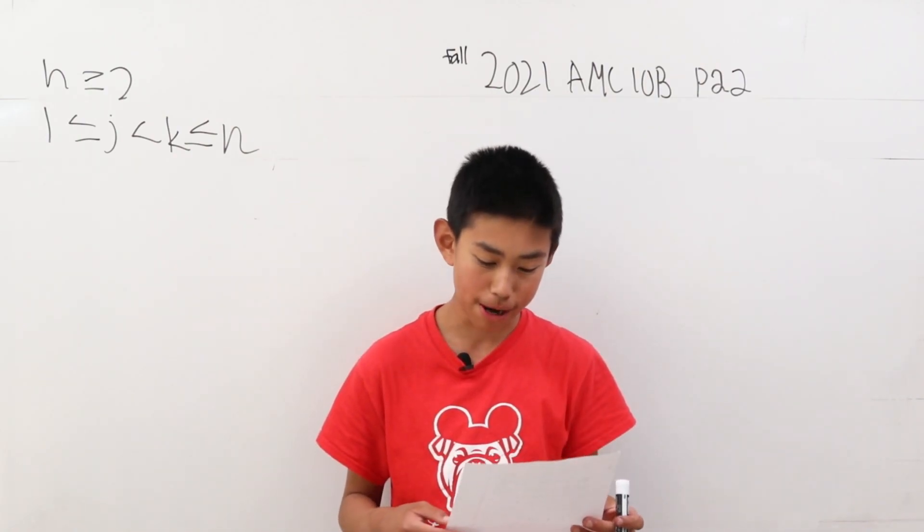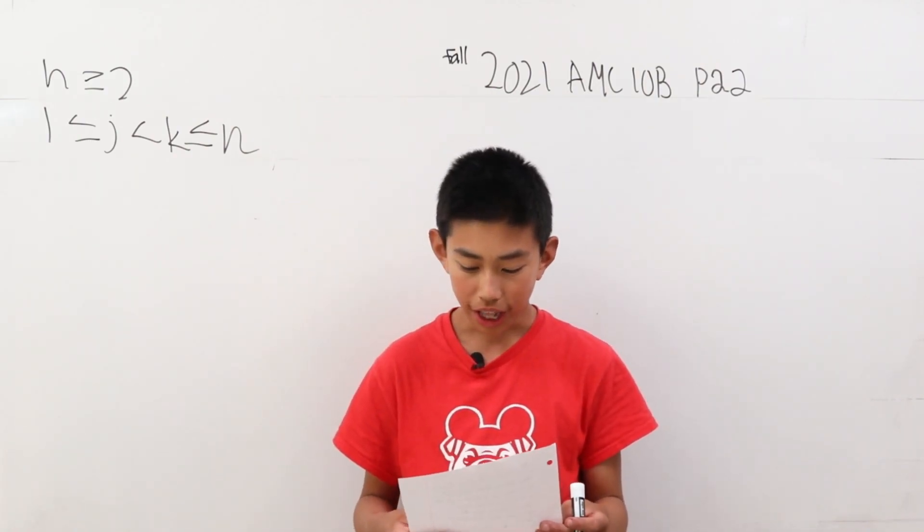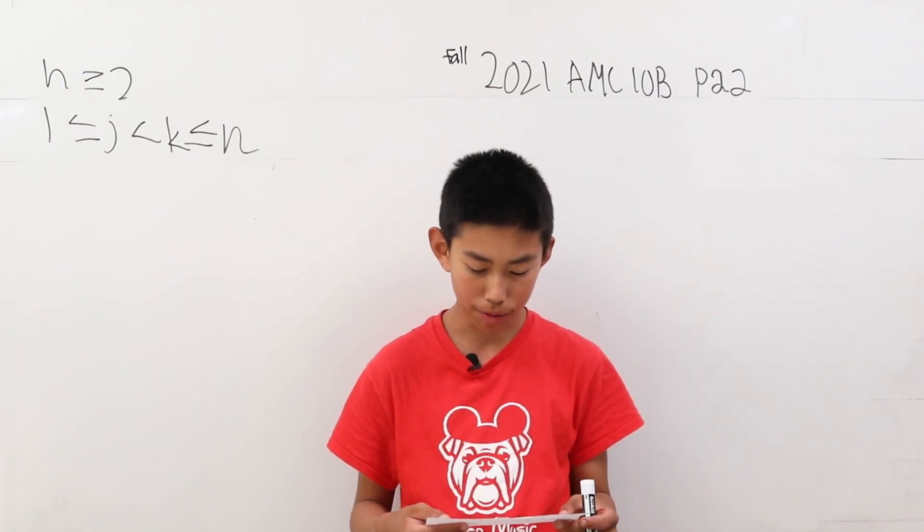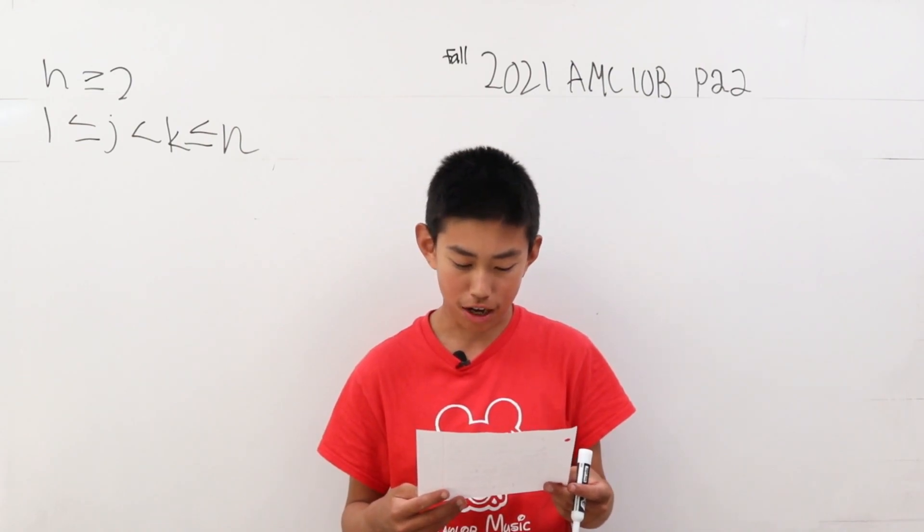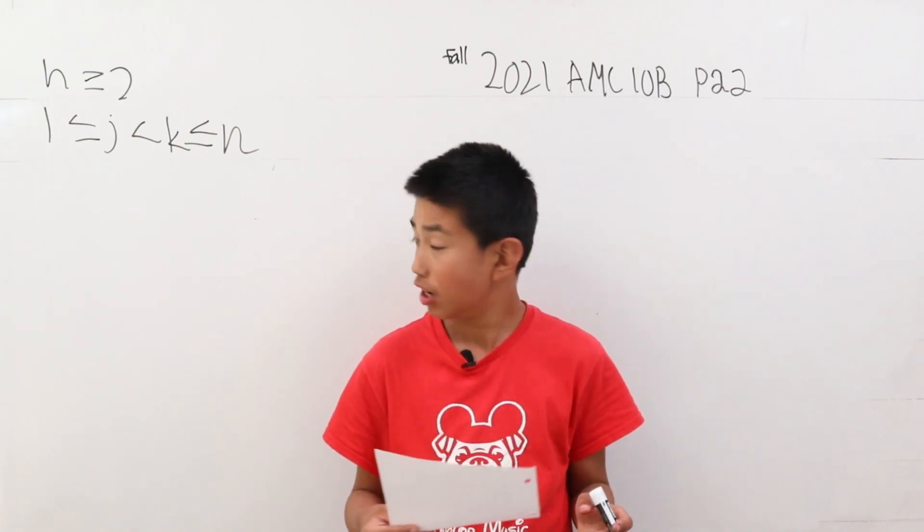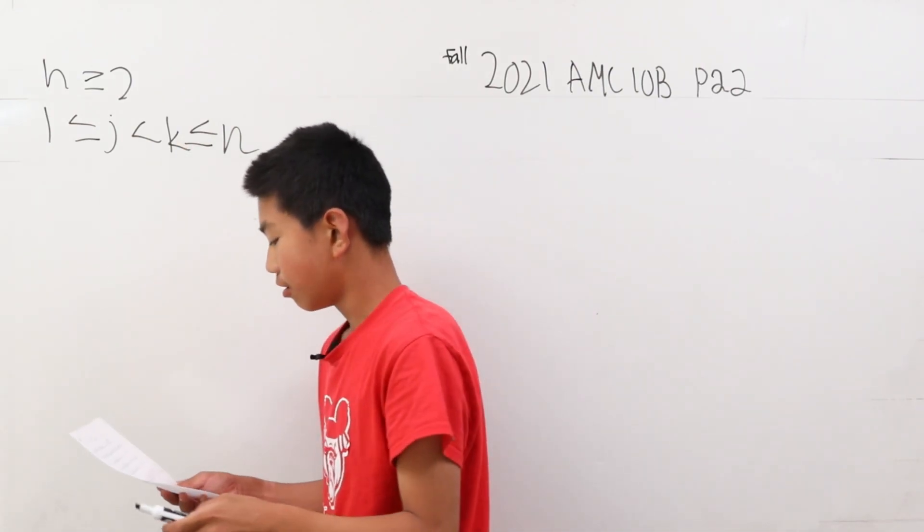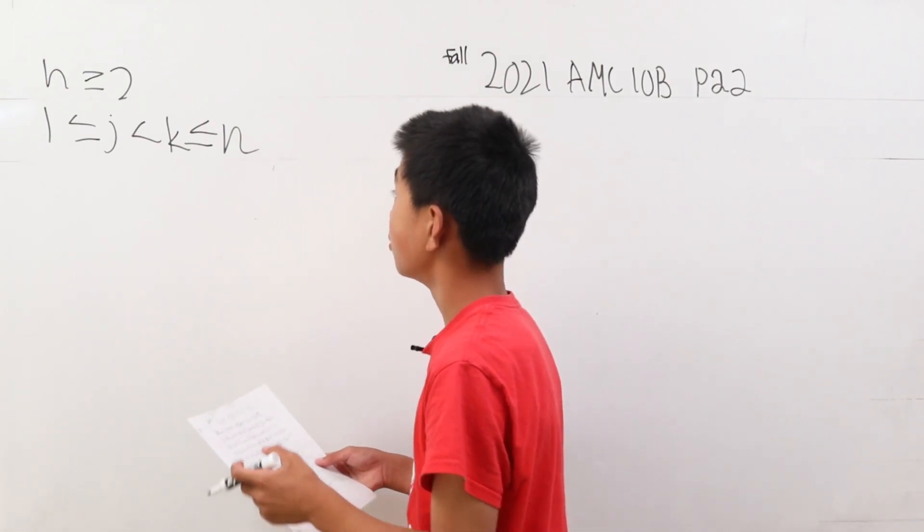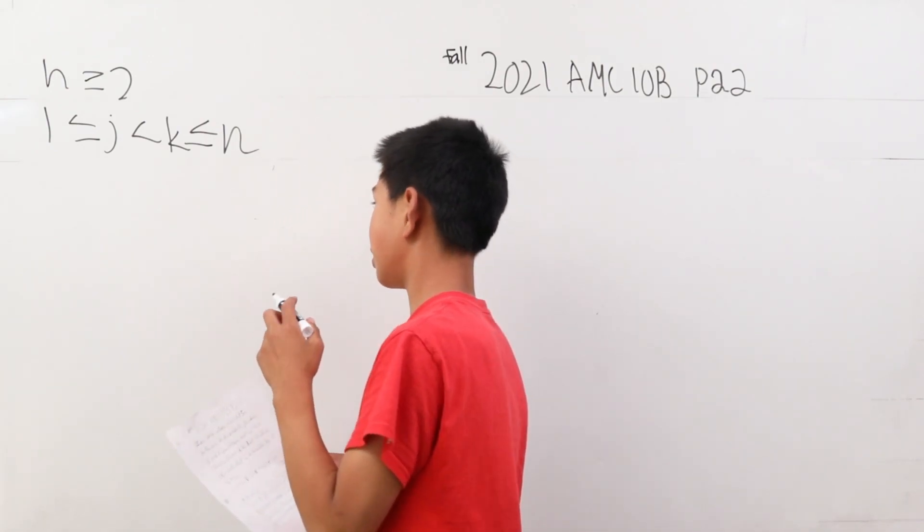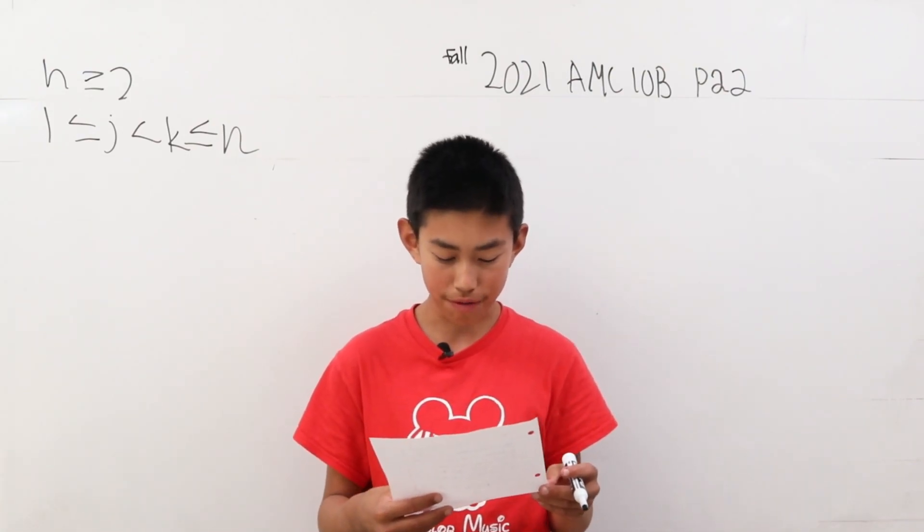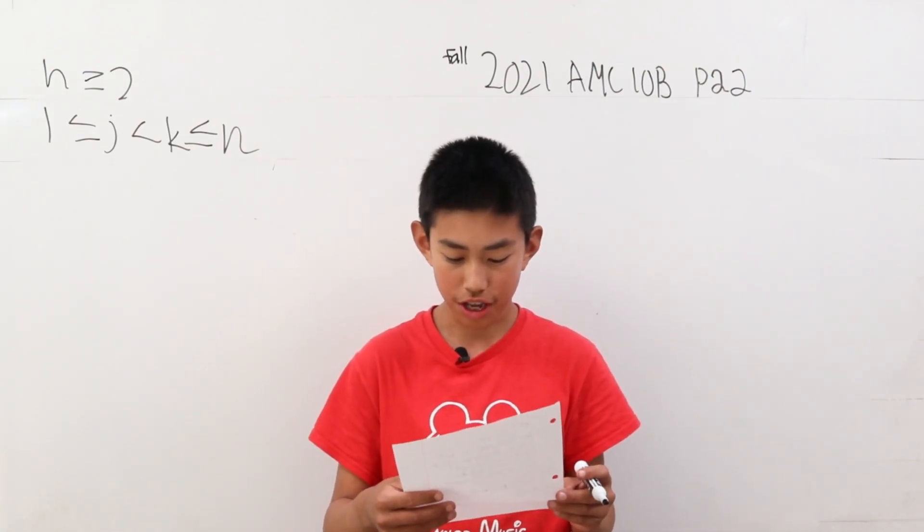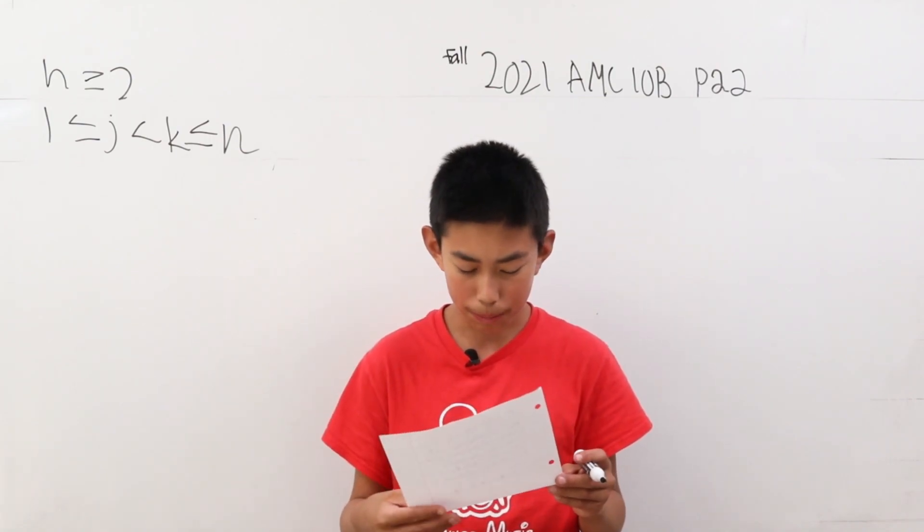For each integer n greater than or equal to 2, let s of n be the sum of all products j times k, where j and k are integers, and this inequality expresses what values are between j and k. So what is the sum of the least 10 values of n such that s of n is divisible by 3?